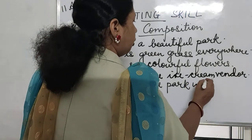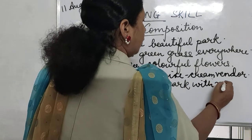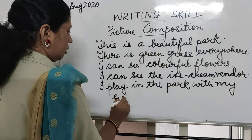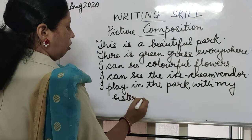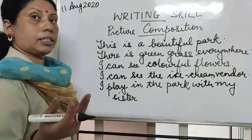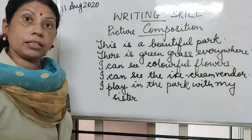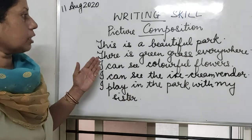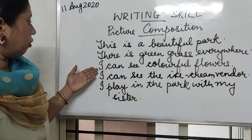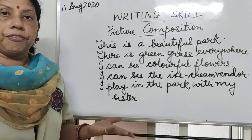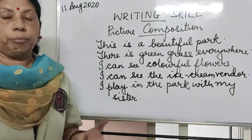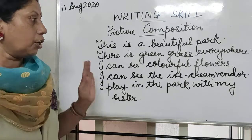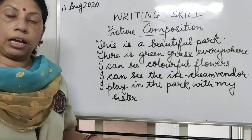'I play in the park with my sister.' Or if you want to include brother and sister both, you can use the word 'siblings.' So now see how many sentences we have made — 1, 2, 3, 4, 5. Very simple ones, but we have framed them on our own and written at least 5 sentences.